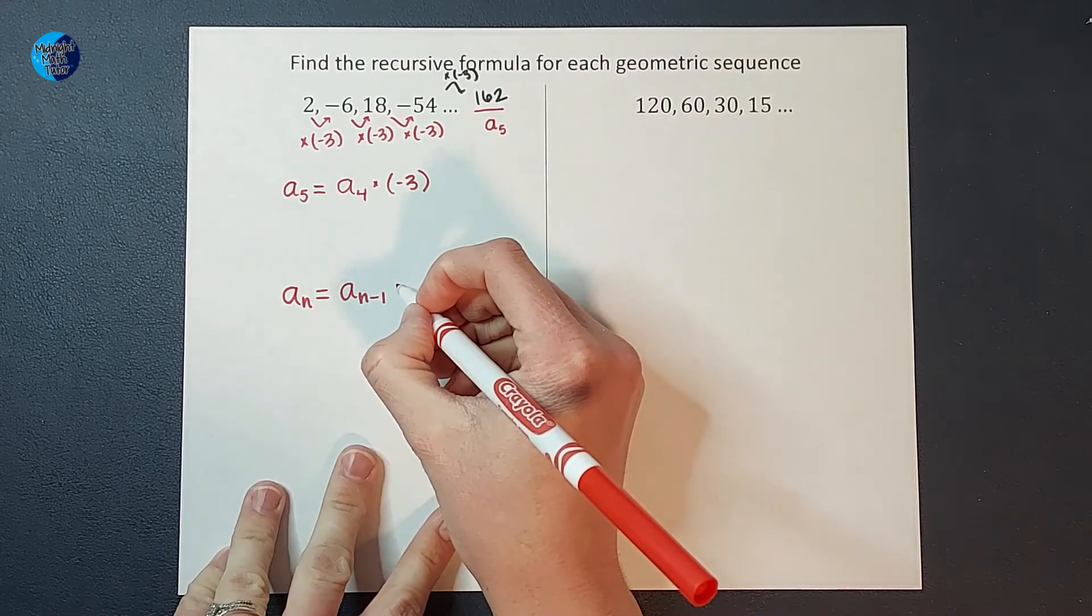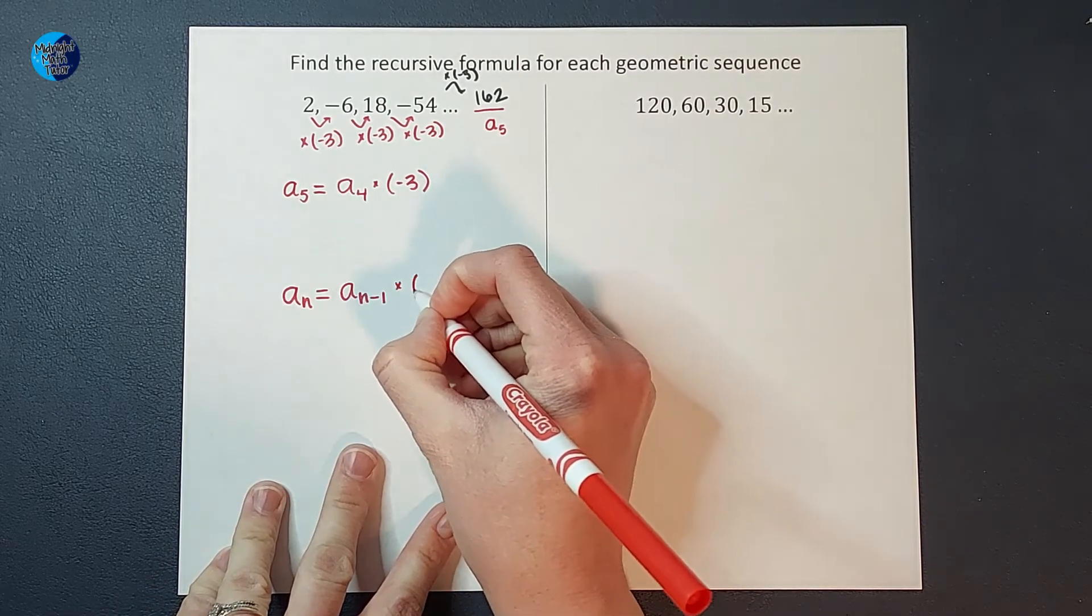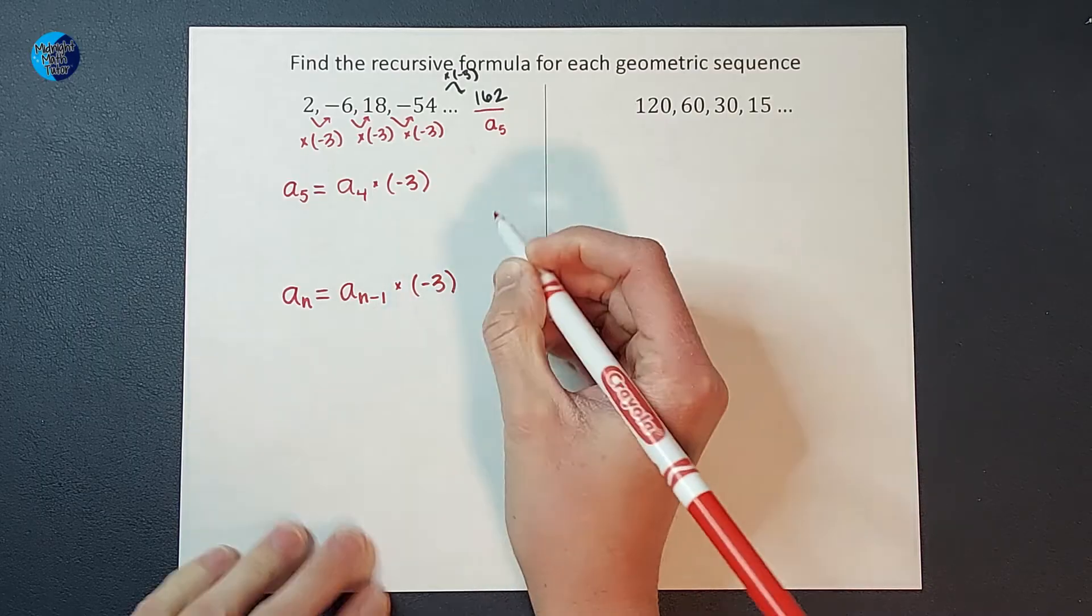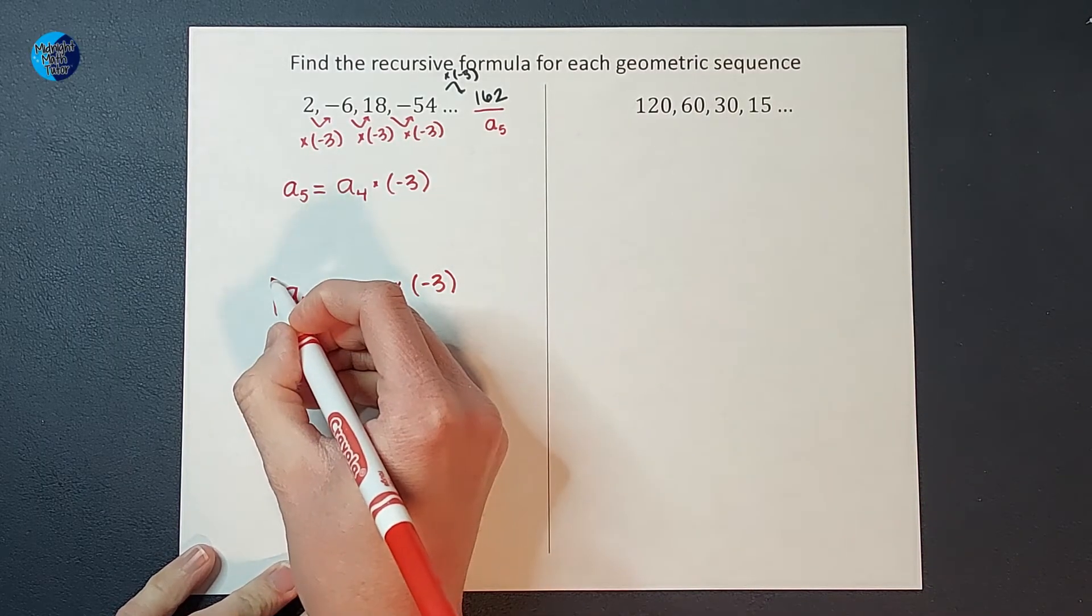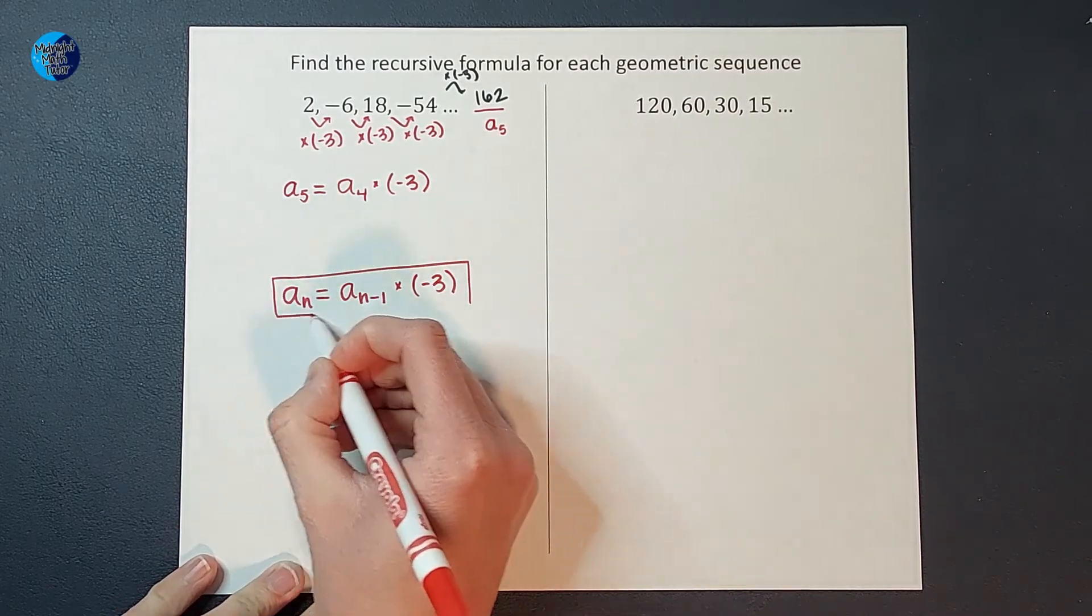And what do you do? You multiply it by negative 3. Oh my heck, that's my recursive formula.